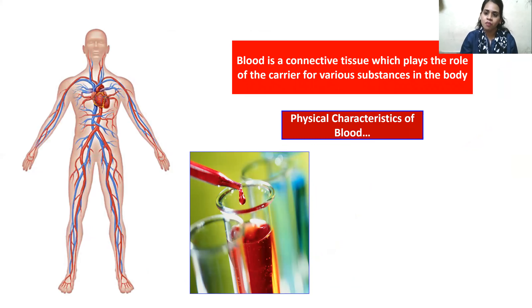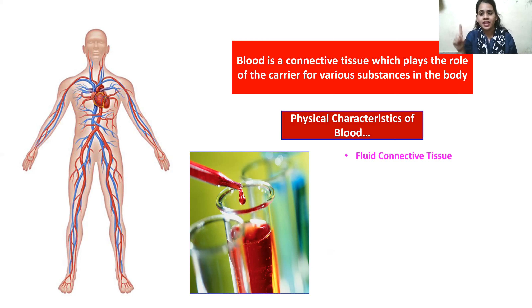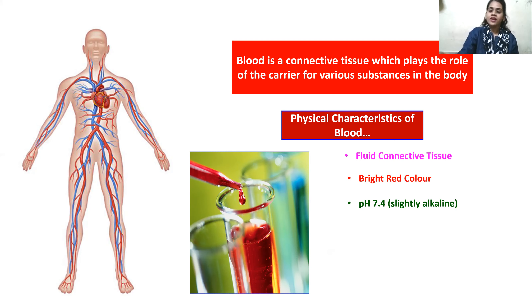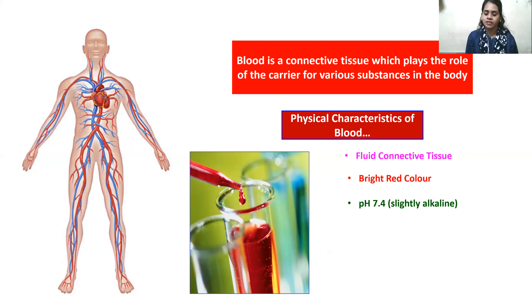Blood is called a fluid connective tissue and the main carrier of our body because it transports various substances. You must have seen blood — you might have got a cut at some point and seen it at the site of injury. The color of blood is bright red. So let's understand the physical characteristics of blood: it is a fluid connective tissue, bright red in color, and its pH is slightly alkaline at 7.4. When pH is above 7 we call it alkaline, below 7 acidic, and exactly at 7 neutral. So our blood falls into the category of slightly alkaline.